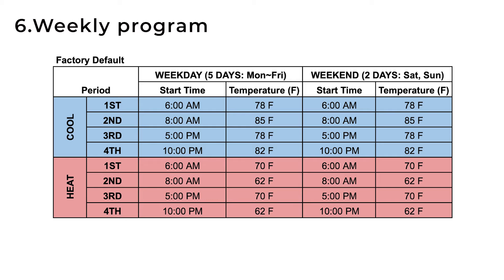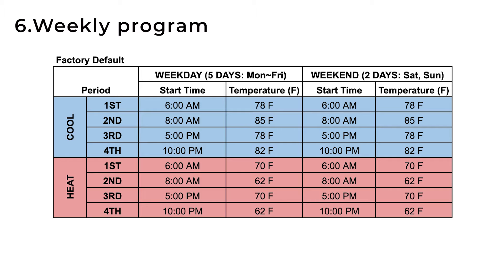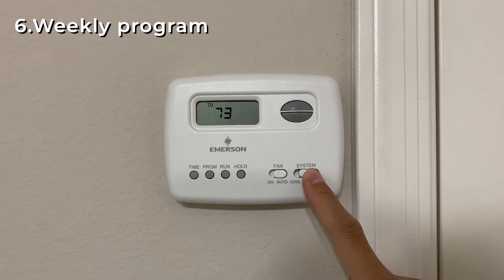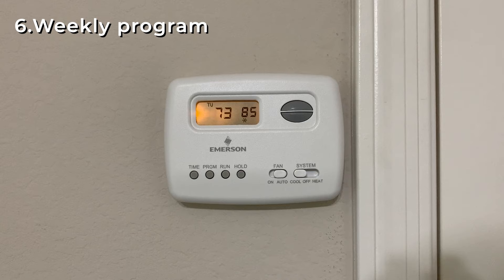To program the weekly temperature schedule, first let's take a look at this table. When the thermostat is reset, this will be the default weekly temperature schedule. Each cool and heat mode has its own timeline and desired temperature. For each mode, the week is divided into weekdays and weekends, and the days are divided into four time slots. For example, in cool mode, the thermostat will keep the temperature at 78 degrees between 6 to 8 a.m., and 85 degrees between 8 a.m. to 5 p.m., and so on. If you're fine with this schedule and temperature, simply switch to cool mode during the summer, or heat during the winter, then hit the run button. The thermostat will then follow this weekly temperature schedule.